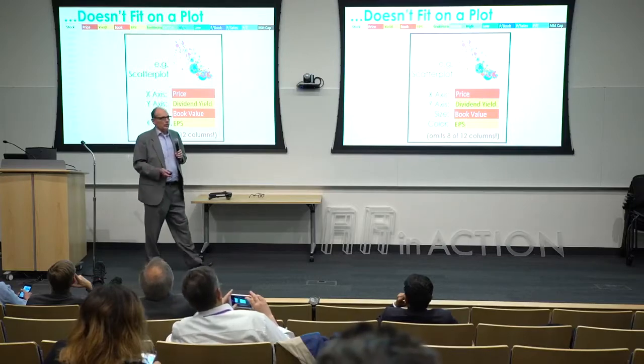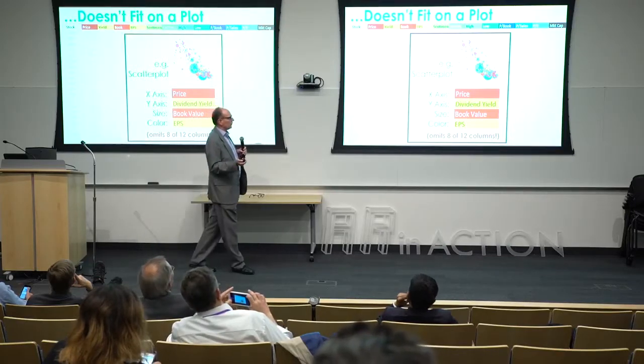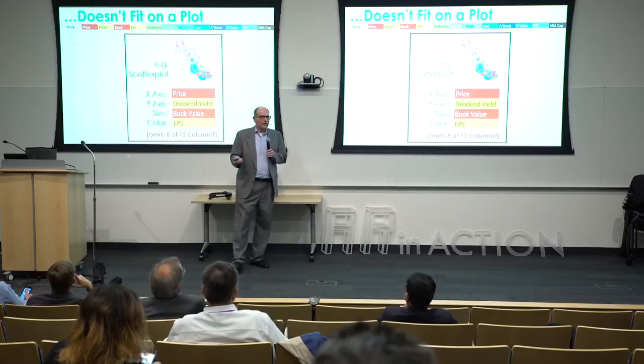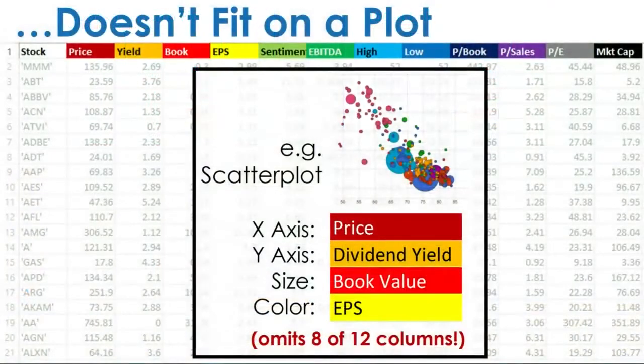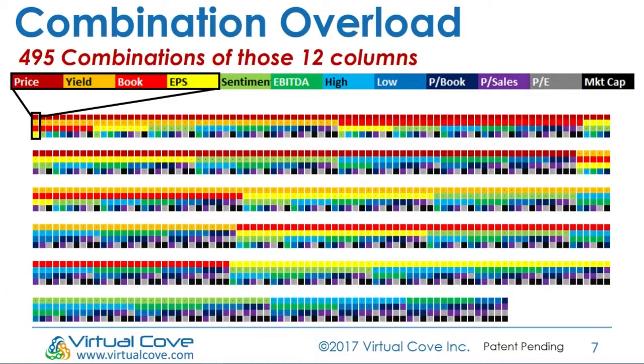The way it's done now typically is with charting. You can do four axes when you're charting. Maybe you add some animation that could be a fifth axis. It's basically not done because the way in which you do it would just take absolutely too long. If you looked at the 495 combinations of a four dimension scatterplot, it would take you hours and hours, over 40 hours. It's not done.